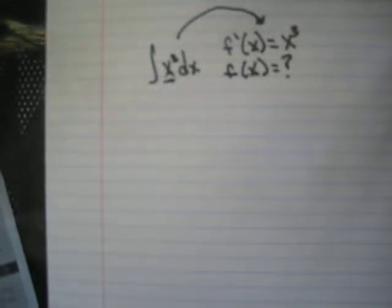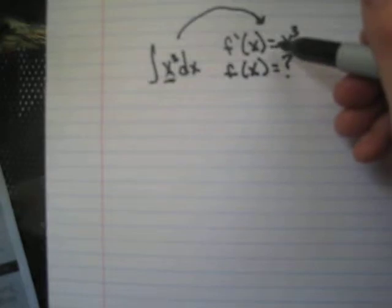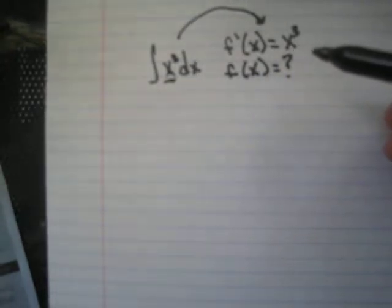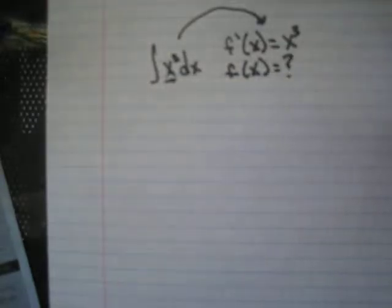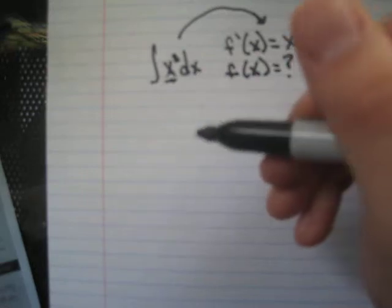So how are we going to do that? Well, in cases like this, there's a pretty simple way to find what we call the anti-derivative, or the function that the derivative came from. And it's kind of like a reverse power rule.